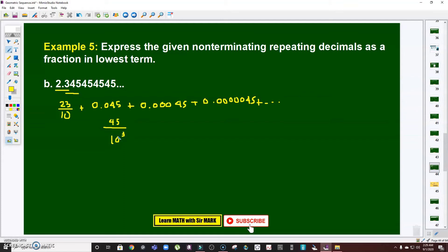45 over 1000 or 10 cubed is 0.045. Plus 45 over—count the number of decimal places: 1, 2, 3, 4, 5. So this one is 10 raised to 5. This one is 45 over 10 raised to 7, and so on. See that?